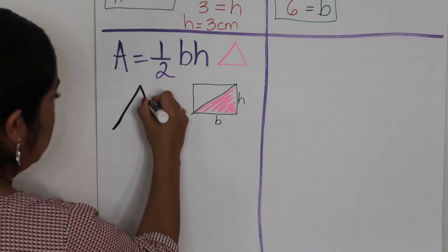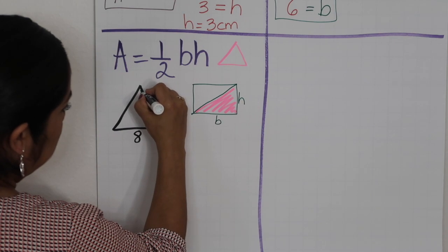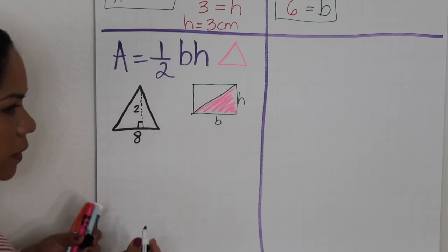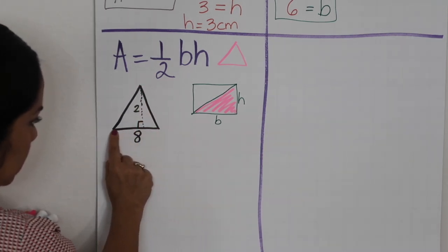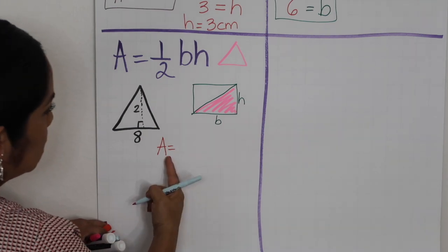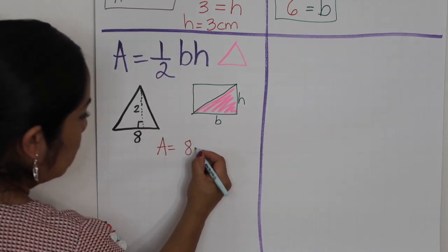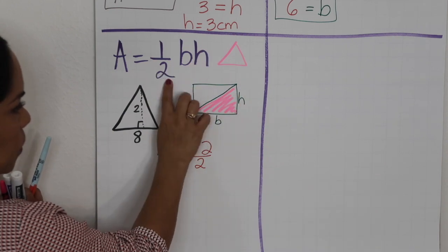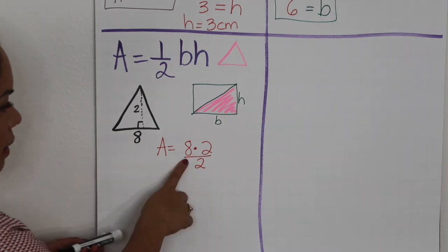Let's say we have a triangle with the base equal to 8 and the height equal to 2. This is the height and this is the base. To find that area, I'm going to start substituting the numbers using the formula for the area of a triangle: base times height divided by 2. That's another way of writing it instead of writing one half — it is basically the base times the height divided by 2.